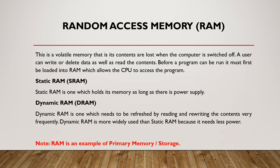RAM — Random Access Memory. This is a volatile memory, meaning its contents are lost when the computer is switched off. A user can write or delete data, as well as read the contents. Before a program can be run, it must first be loaded into RAM, which allows the CPU to access the program.